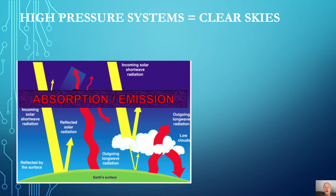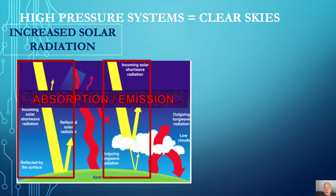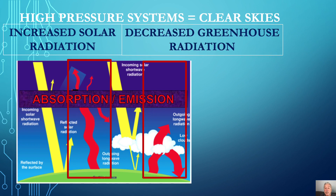High-pressure systems create warmer temperatures in several ways. The dry, descending air in a high-pressure system produces clear skies. Without clouds or mist to block out sunlight, surfaces are heated more strongly by solar radiation. Water vapor is a greenhouse gas, so without clouds and with reduced water vapor, more infrared heat escapes directly to space — meaning clear skies also reduce the greenhouse effect. Nonetheless, increased solar heating has a greater warming impact and offsets any decrease in greenhouse effects.